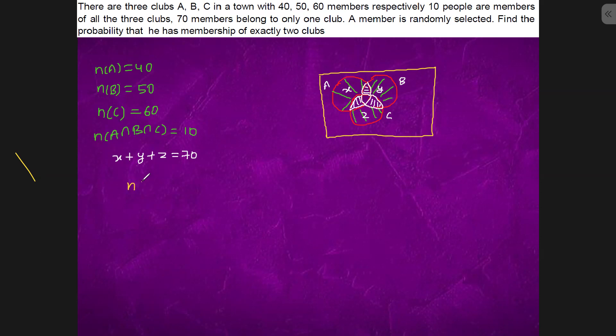So this is n(A∩B) minus n(A∩B∩C) plus n(B∩C) minus n(A∩B∩C) plus n(A∩C) minus n(A∩B∩C).